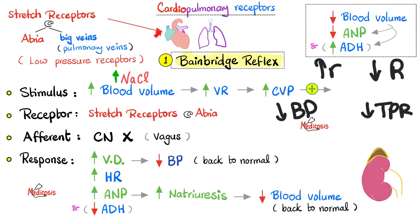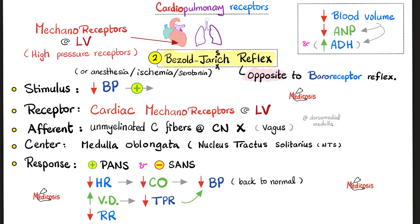The next reflex is the Bezold-Jarisch reflex. What is the stimulus? Hypotension, anesthesia, or ischemia — which decreases perfusion — or serotonin and other chemicals released during ischemia. There will be less pressure on the cardiac mechanoreceptors, mostly in the left ventricle. They send afferent fibers via unmyelinated C fibers that are part of the vagus nerve. Because we're part of the vagus nerve, the center has to be in the medulla oblongata — particularly the nucleus tractus solitarius.